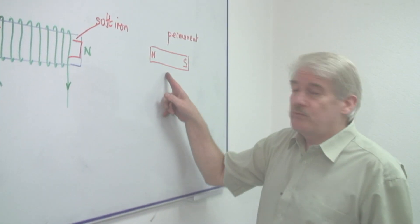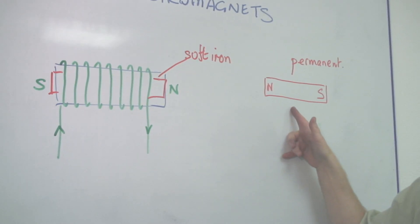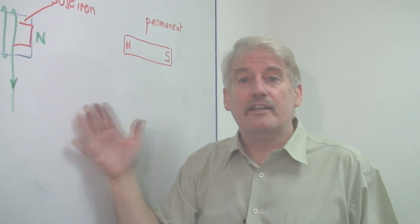But if I try and do it with a permanent magnet, of course, I won't succeed because I can't switch this magnetism off. So that is basically how an electromagnet works.